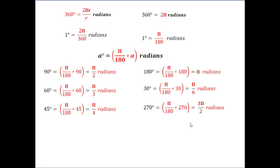Now let us take one random angle, say 105 degree. Then 105 degree can be written as π by 180 multiplied by 105 and ultimately it can be written as 7π by 12 radians.